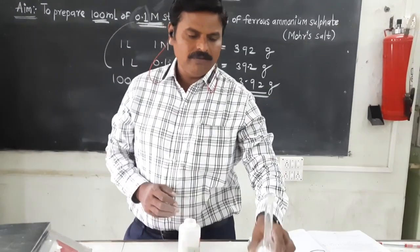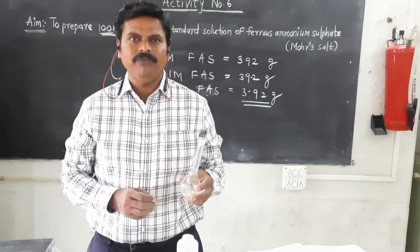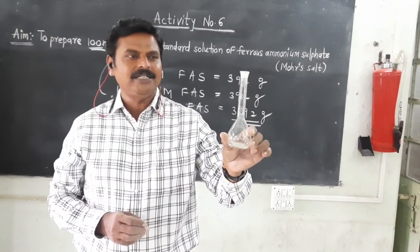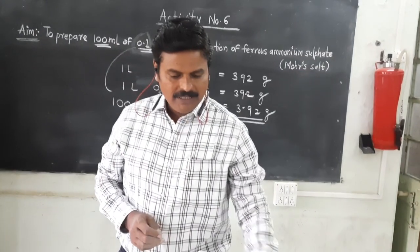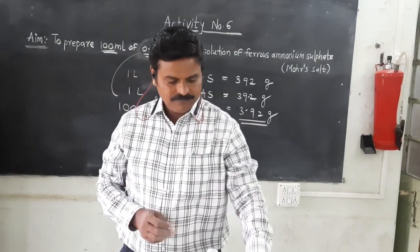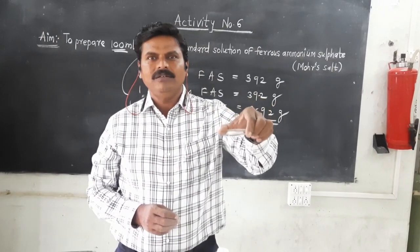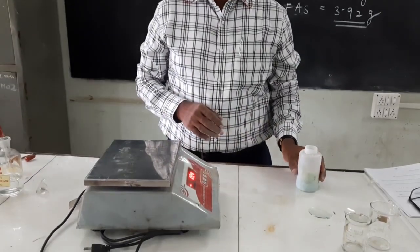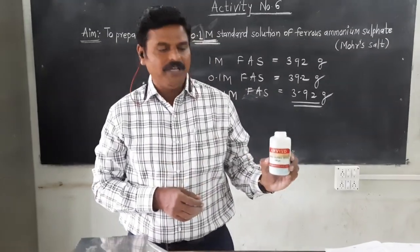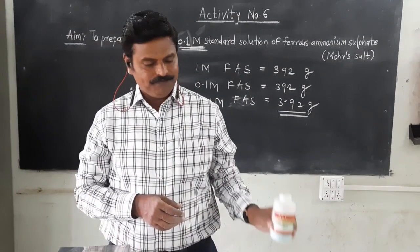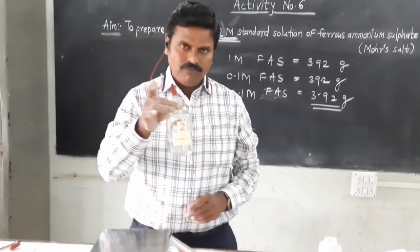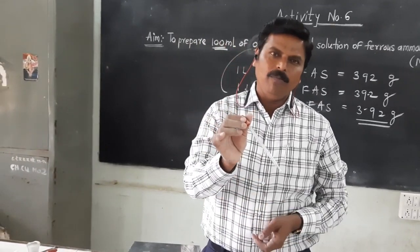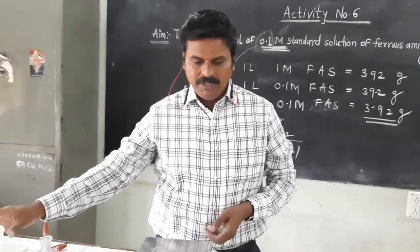Apparatus used for preparation of standard solution of ferrous ammonium sulfate: a volumetric flask with capacity 100 ml, glass beaker, watch glass for weighing the compound, digital balance, and the chemical — ferrous ammonium sulfate powder. Dilute sulfuric acid, glass dropper, and distilled water are also used.